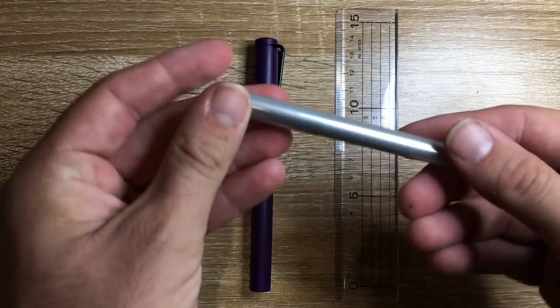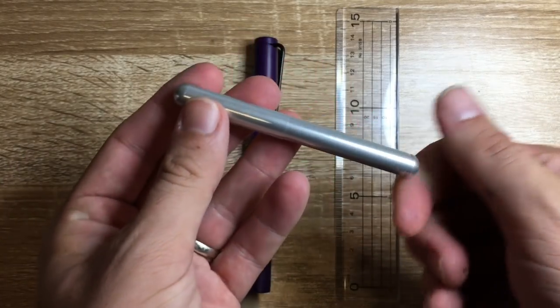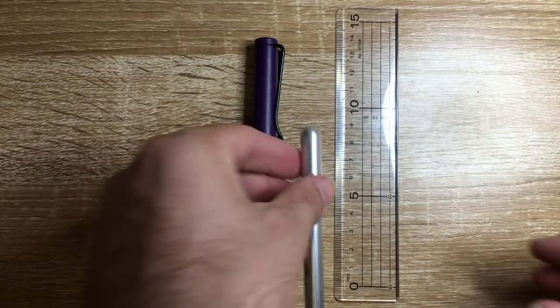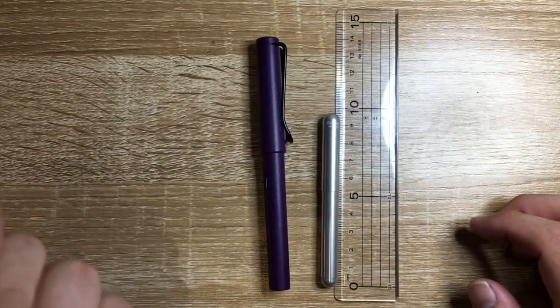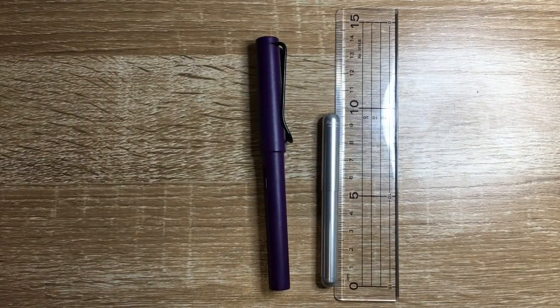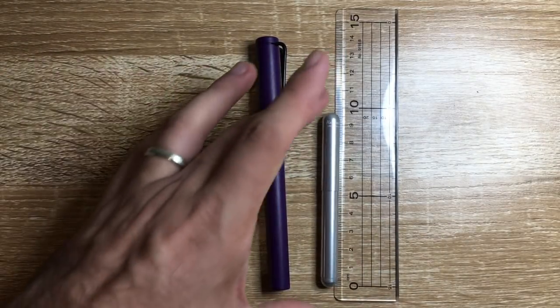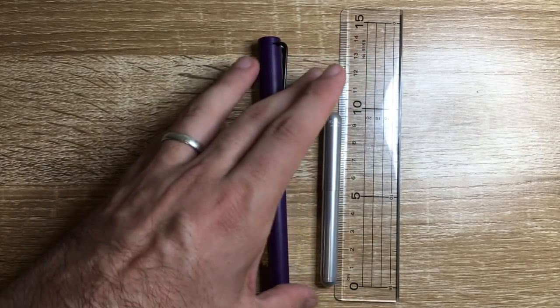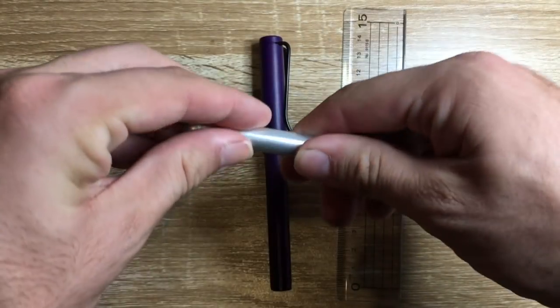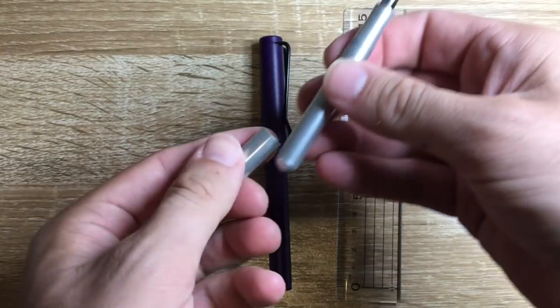Next is the Kaweco Lilliput. This pen is tiny. It is probably one of the smallest fountain pens on the market. It's still got decent, takes a standard international cartridge and all of that, and it's got great nibs on them, but it is a tiny little pen, but it packs a huge punch the way that this pen writes.